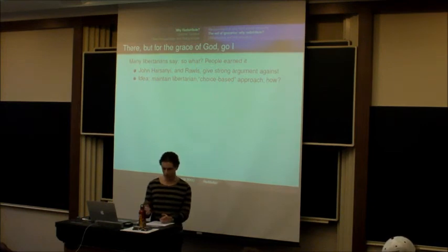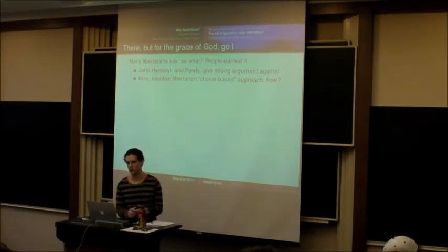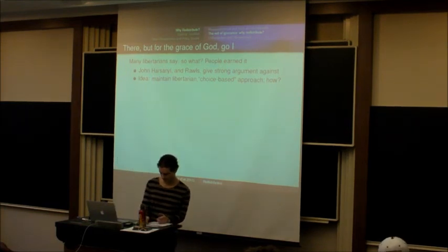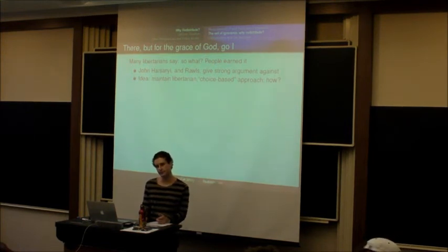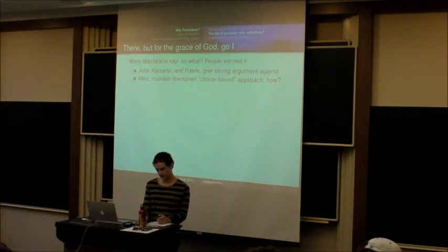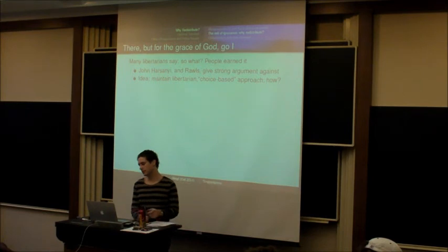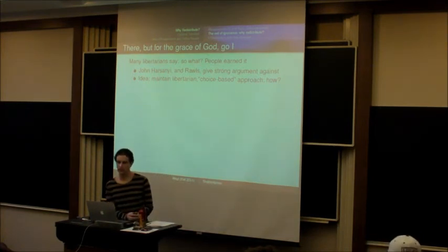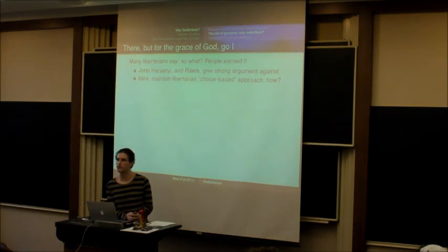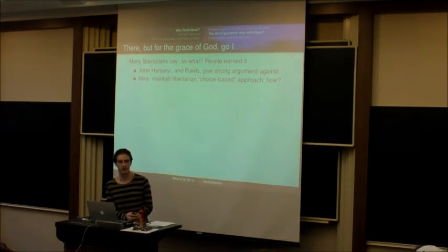Does anyone want to summarize Harsanyi's argument? Student: When individuals don't know where they're going to end up in society, it makes sense to look at the average or minimum utility level of individuals and try to maximize that, to provide safety against really terrible outcomes. Professor: That's right. One very parsimonious way to summarize their argument is a quote from a famous preacher from the 16th century who, seeing poor people walking through the streets, said: 'There but for the grace of God go I.' The idea is that if he hadn't been lucky, he might have ended up as those people.